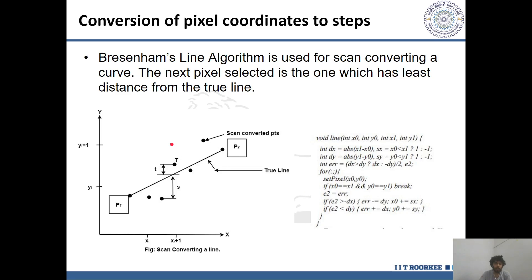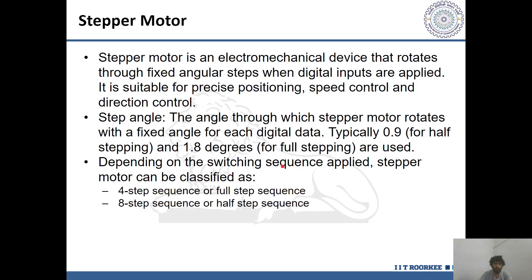Then the Bresenham's algorithm is implemented which selects the next pixel which has the least distance from the true value. So if P1 and P2 are scanned initial and the target pixels, then a curve fitting is done by assuming a straight line which is converted into the number of steps for the stepper motor by multiplying with the separation dx and dy as we can see in this pseudo code. All this computing is done on a remote PC and is then sent as input to the microprocessor 8085 via the serial port as the buffer.